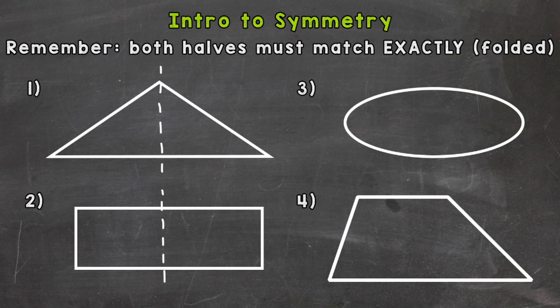My dashed line doesn't look like it's exactly in the middle, but it's close enough. You would have to be exactly in the middle for it to be a line of symmetry.